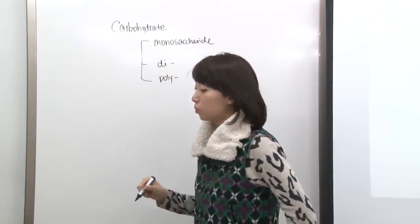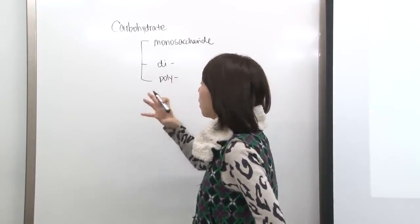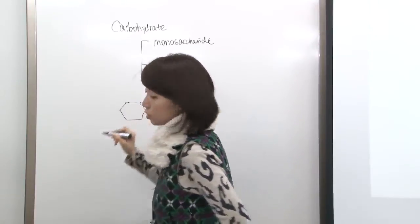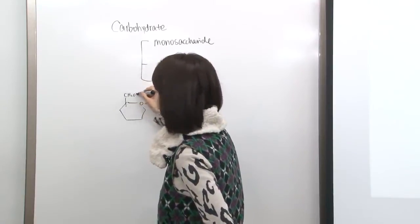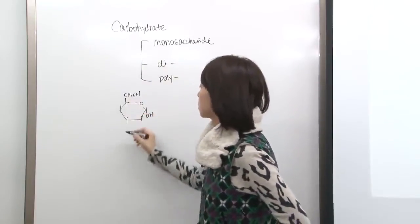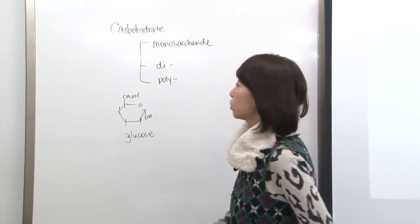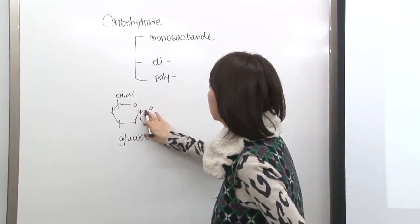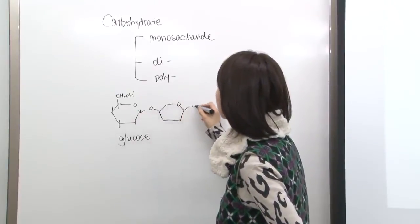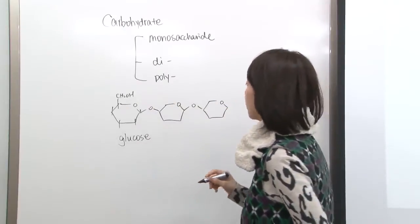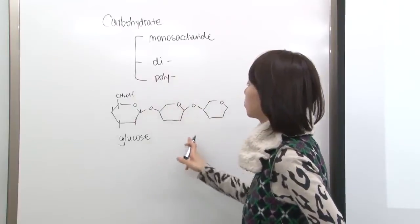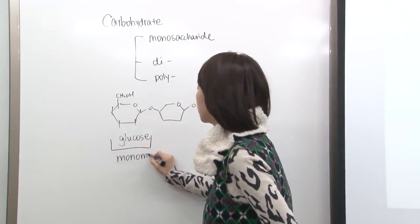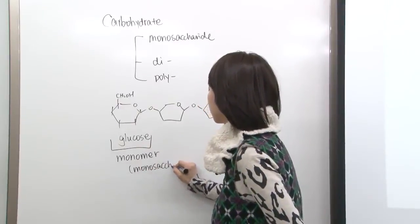Polysaccharide is basically what we take in — for example, in rice you have polymers of monomers. When you look at figure 4.4, you can see the structure of glucose. In rice or candy, you don't have free glucose — you have polymers of monosaccharides. When you take it in, the bonds get broken and they become monomers in your body. The monomer for carbohydrate is called monosaccharide.